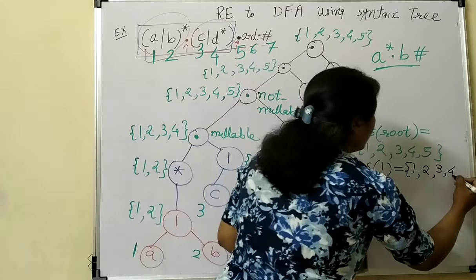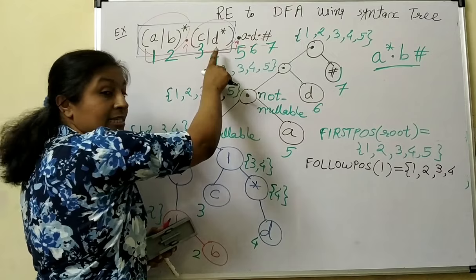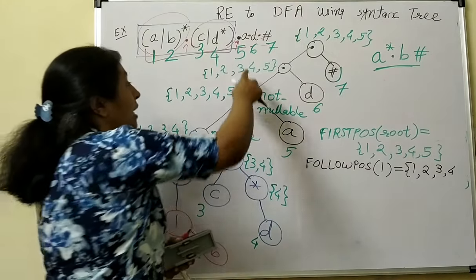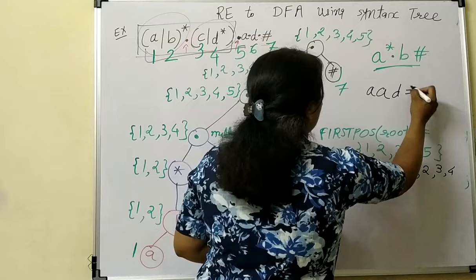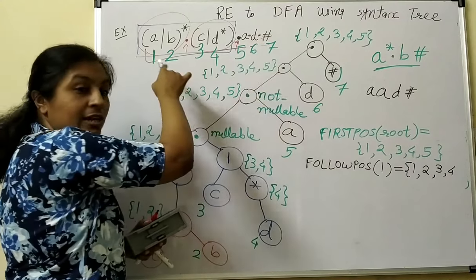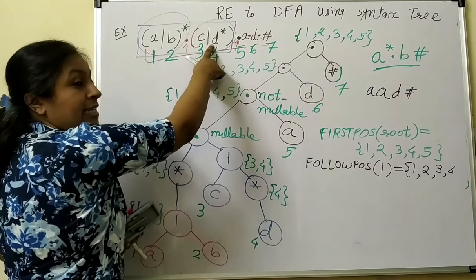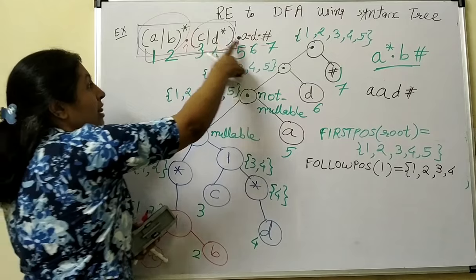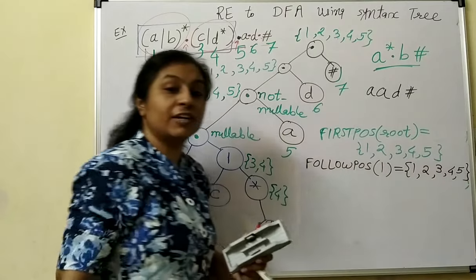If we observe symbols 3 and 4, and select D star from the union, and replace D star with null, then symbol 5 can also follow symbol 1. For example, the string AAD hash is also acceptable: first symbol 1 is selected, then from D star null is selected, giving AAD hash. So follow position of 1 is {1, 2, 3, 4, 5}.